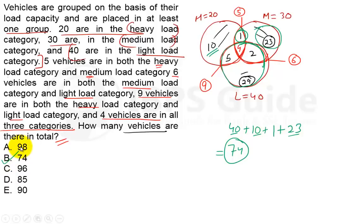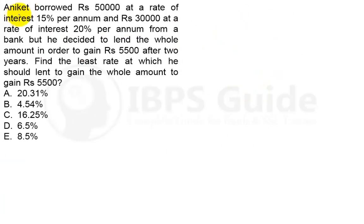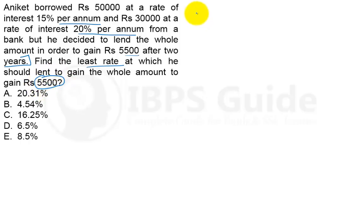Moving on to question number 3. Aniket borrowed rupees 50,000 at the rate of 15% per annum and rupees 30,000 at the rate of 20% per annum from the bank. He decided to lend the whole amount — that is, 50,000 plus 30,000 = 80,000 — in order to gain rupees 5,500 after two years. Find the least rate at which he should lend to gain the whole amount. The time period is two years.